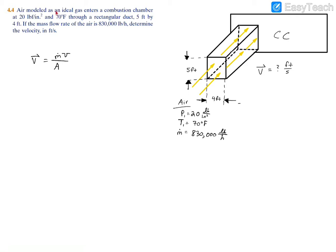Since we're told that the air is modeled as an ideal gas, we'll use the relation pv = mRT. We can also use the specific volume form: p times v_specific equals RT, which simplifies things. Solving directly, specific volume equals the gas constant R times temperature divided by pressure.